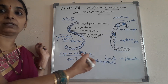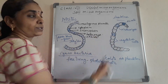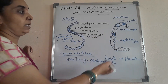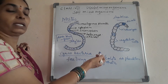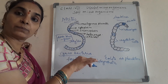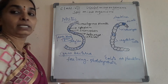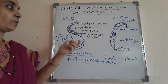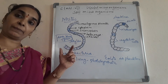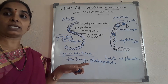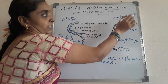Nostoc and Anabaena are free-living organisms that can prepare their own food, as they contain blue-green algal structures. They form symbiotic relationships and also get nitrogen from the soil. Both of these organisms fix nitrogen for the plants.